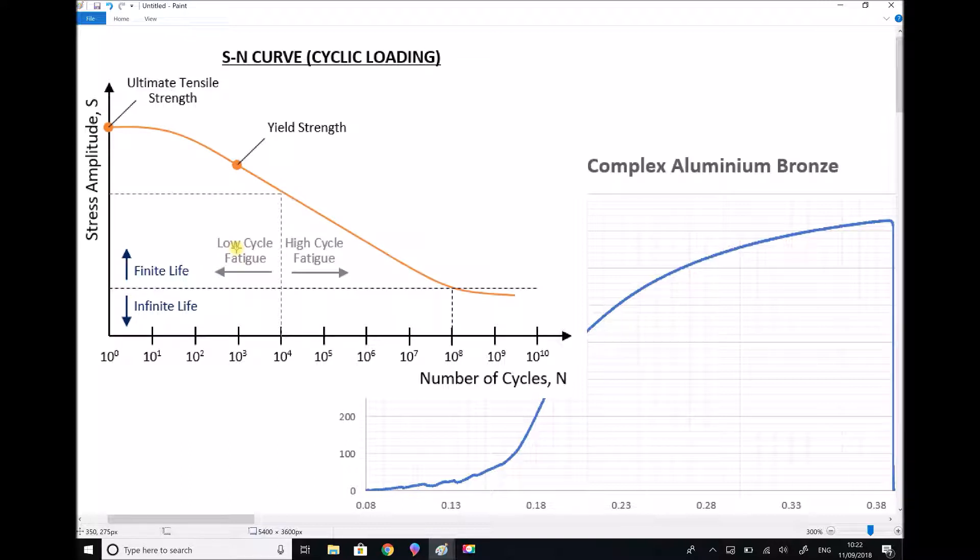So what we're really saying there is that if the stress value is high we have low cycle fatigue because the number of cycles that can be achieved is low, and if we have low stress values we have high cycle fatigue because the number of cycles that can be achieved is high.